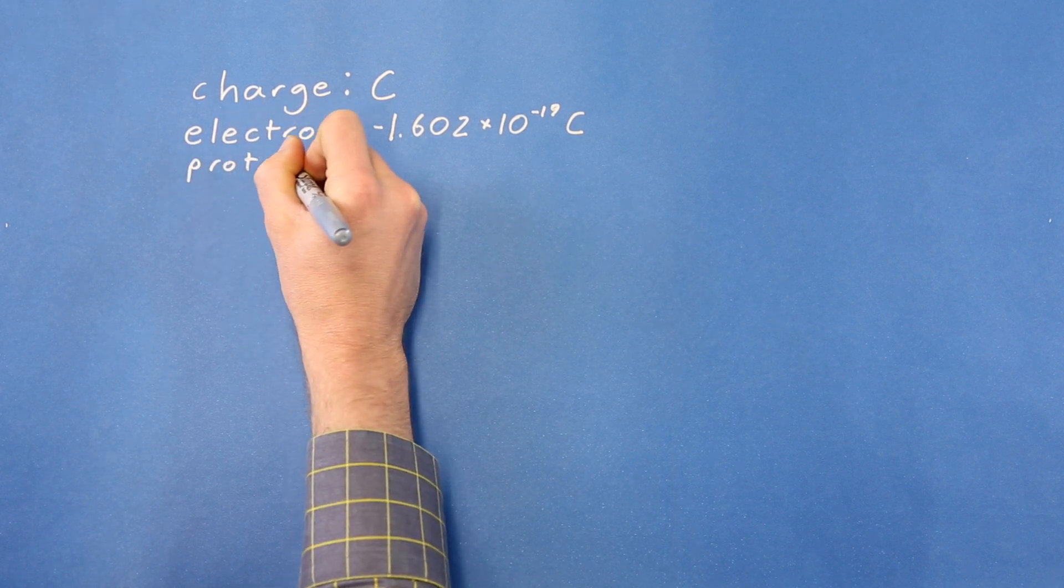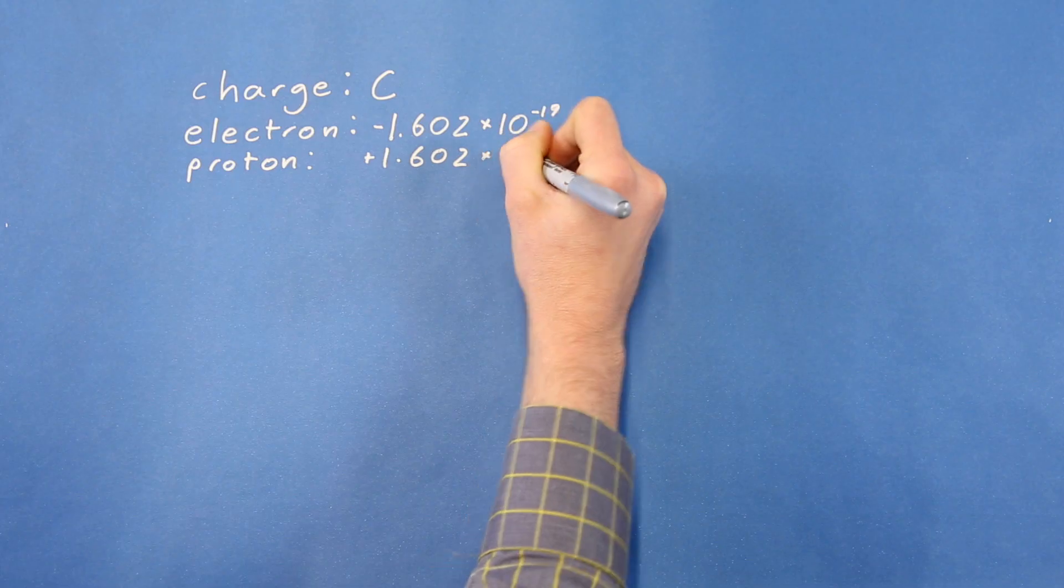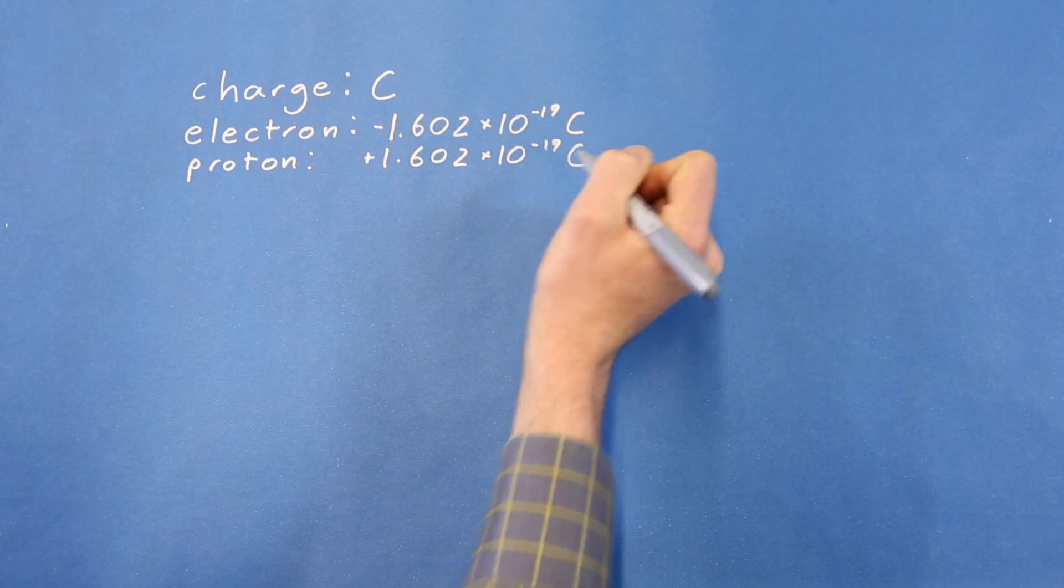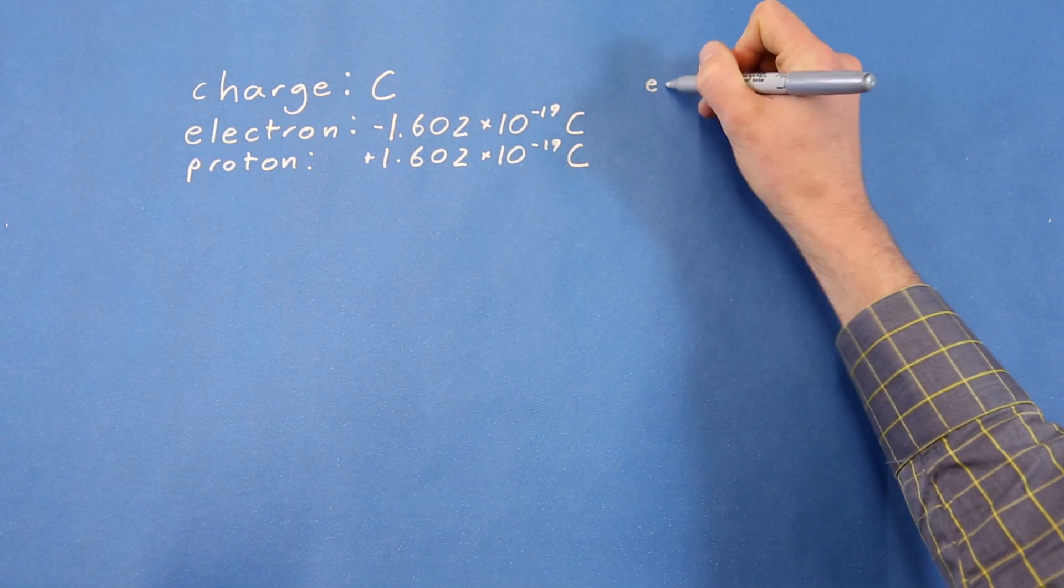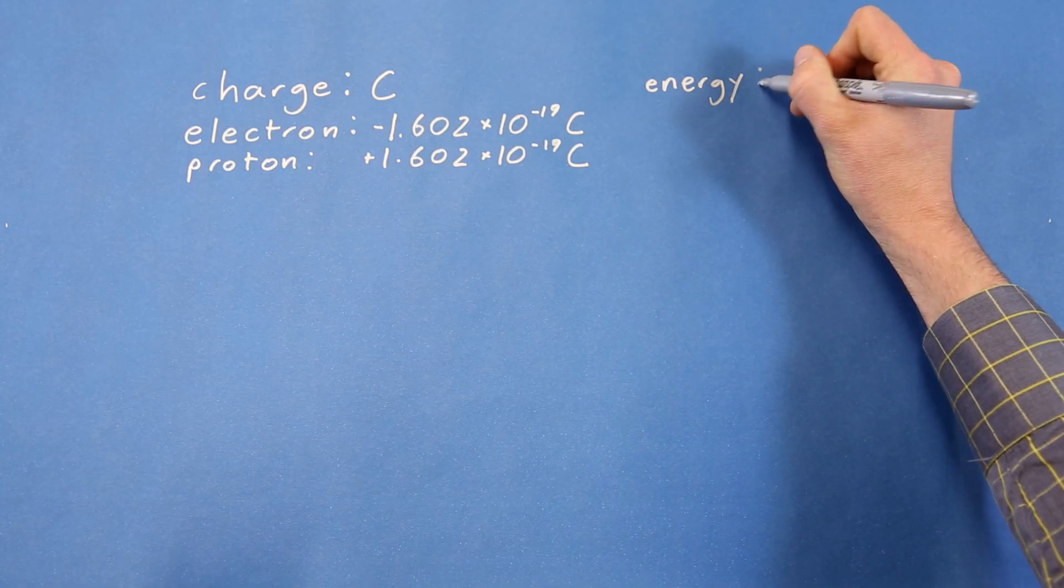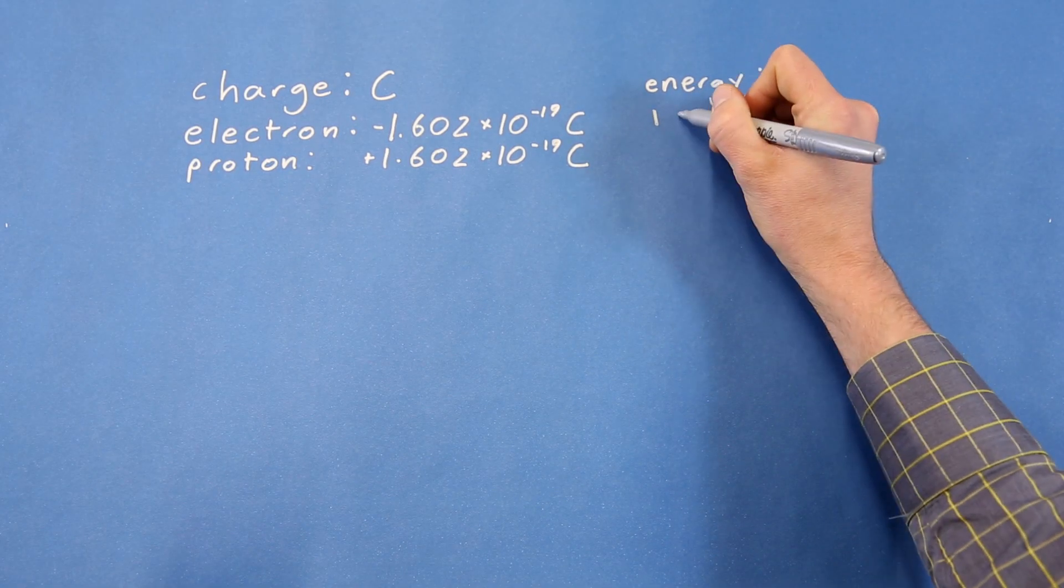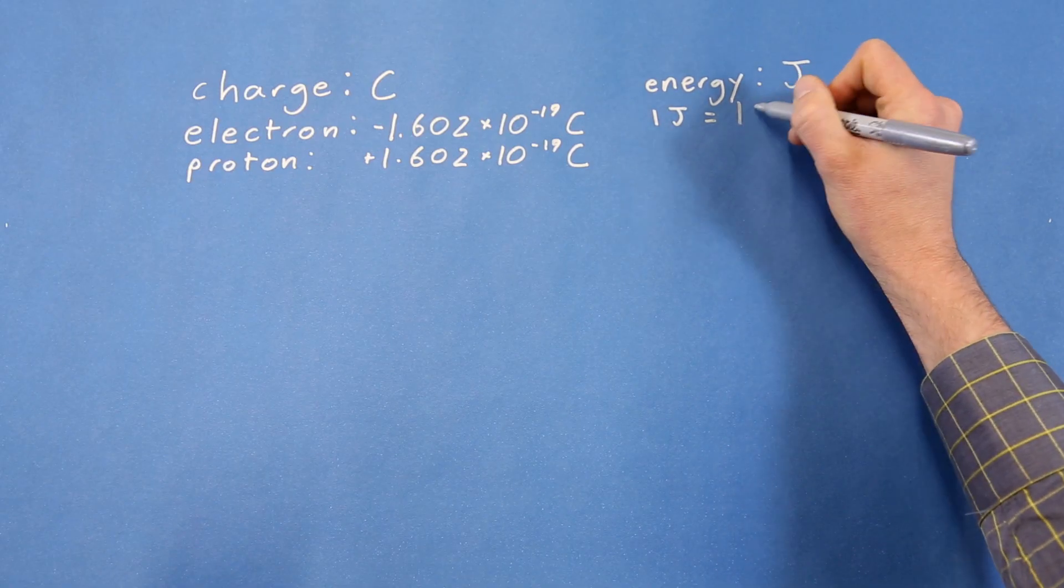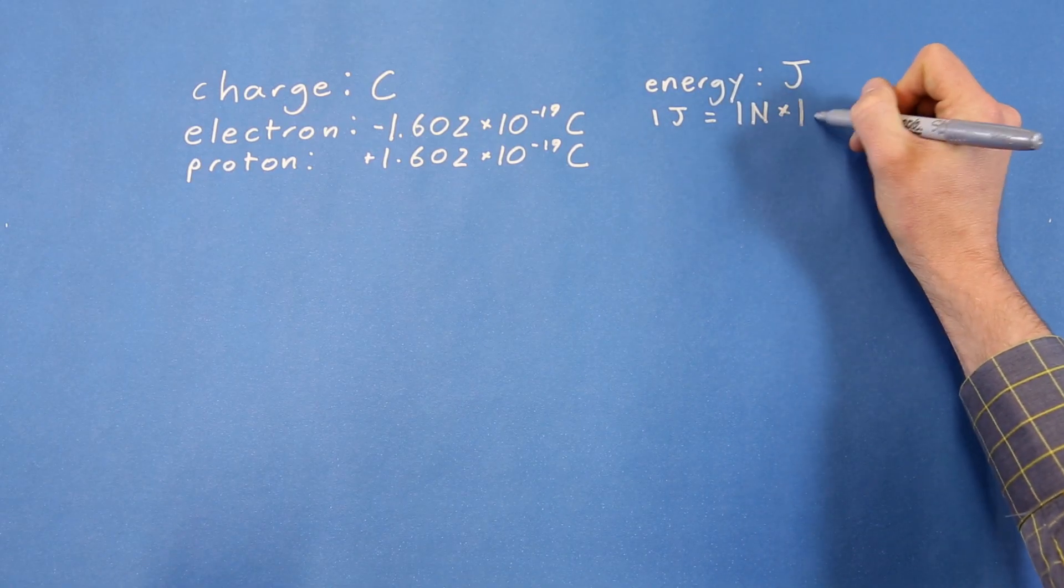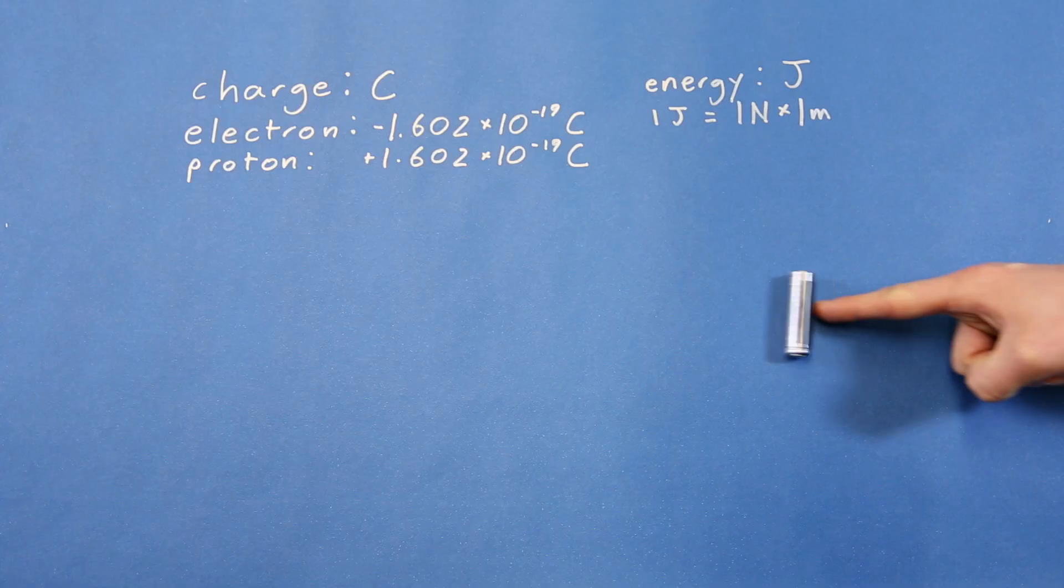Energy is usually given in joules, which is abbreviated with the symbol uppercase J. One joule is equal to the amount of energy transferred to an object when a force of one newton is applied to that object over a distance of one meter.